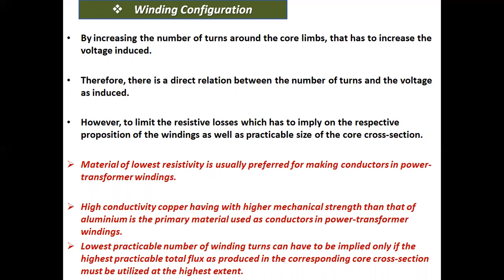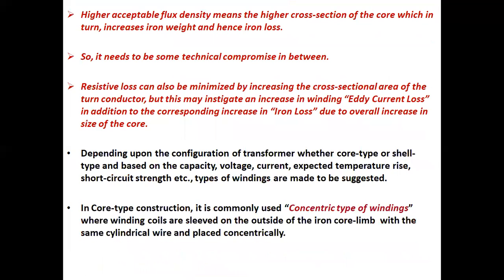The lowest practicable number of winding turns can be achieved only if the highest practicable total flux produced in the corresponding core cross section is utilized to the highest extent. Higher acceptable flux density means a higher cross section of the core, which in turn increases iron weight and hence iron loss — so there needs to be some technical compromise in between.